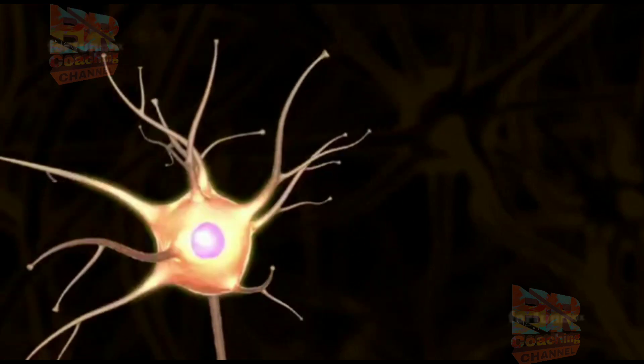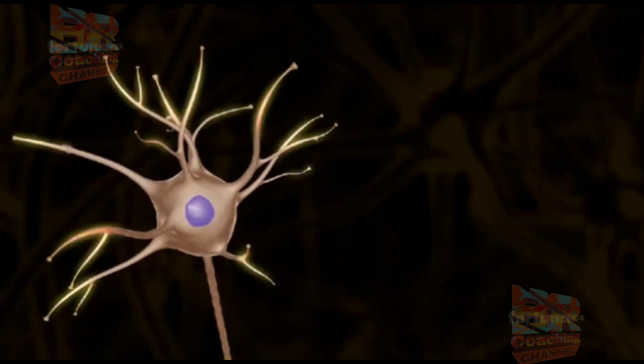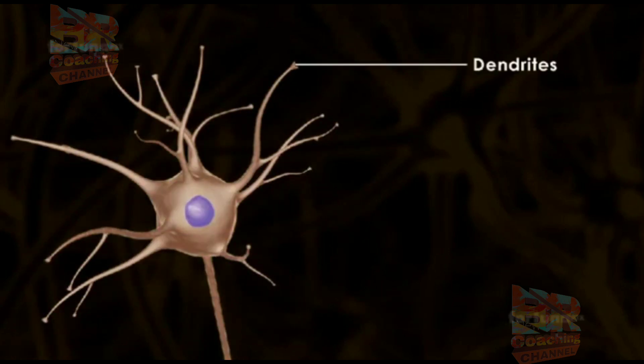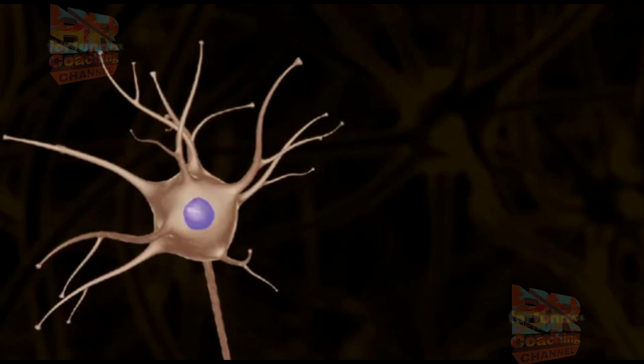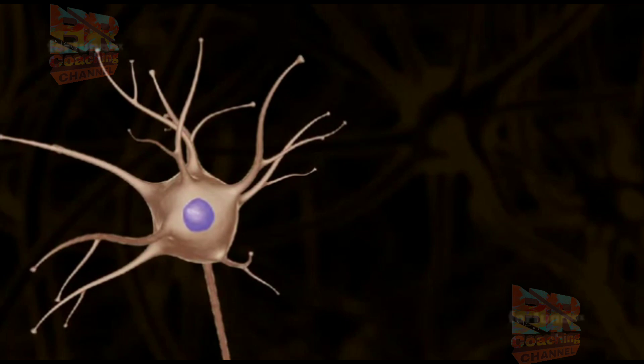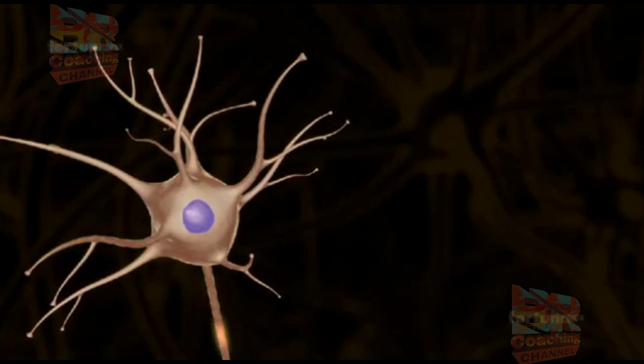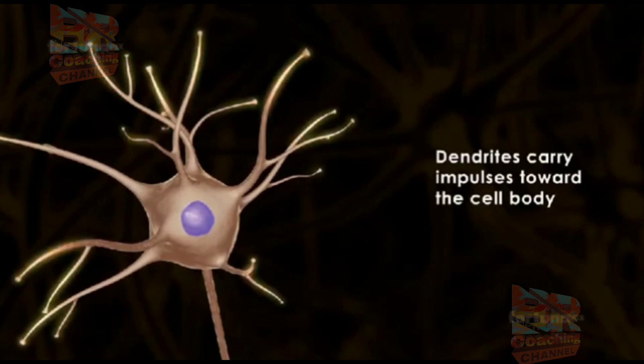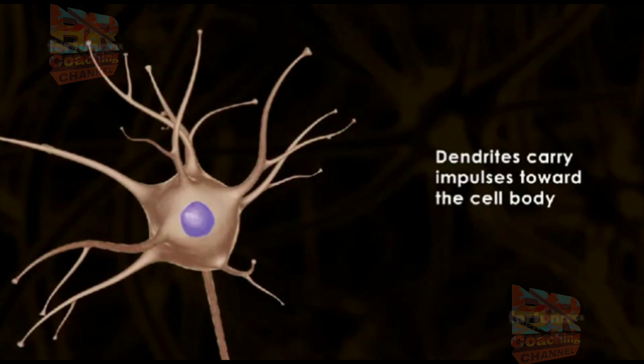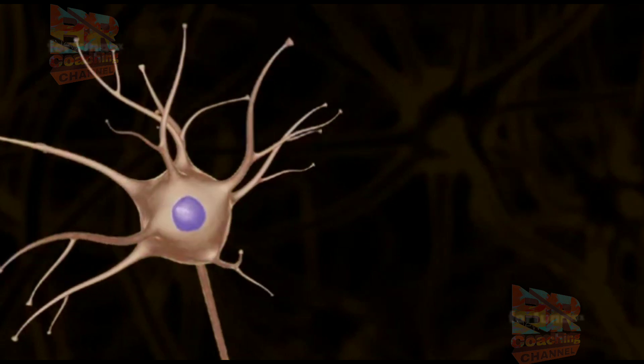Extending from the cell body are several short branched extensions known as dendrites. These receive the neural impulses from receptors or from adjoining neurons, which allows them to communicate with nearby cells. It is only dendrites which carry impulses toward the cell body.